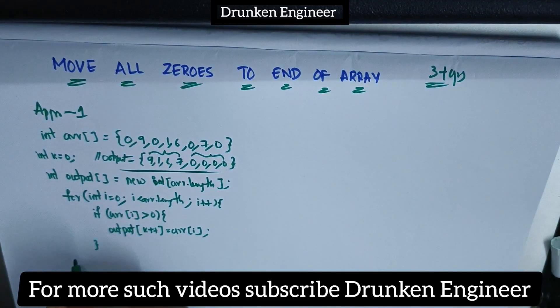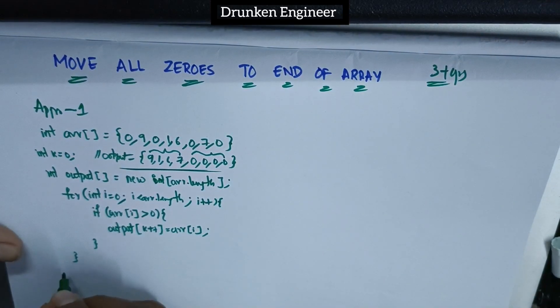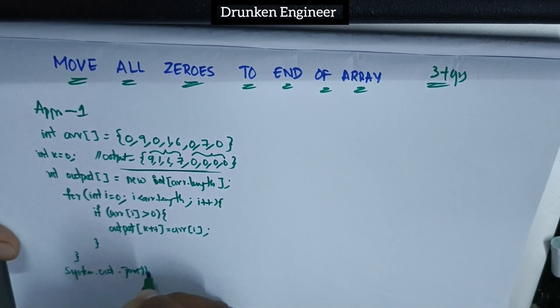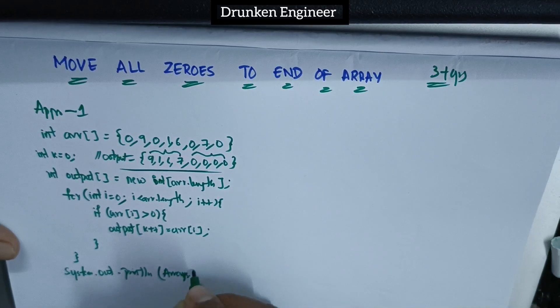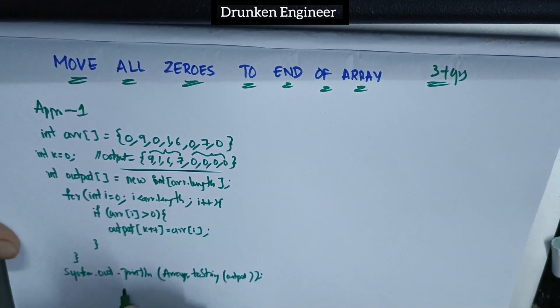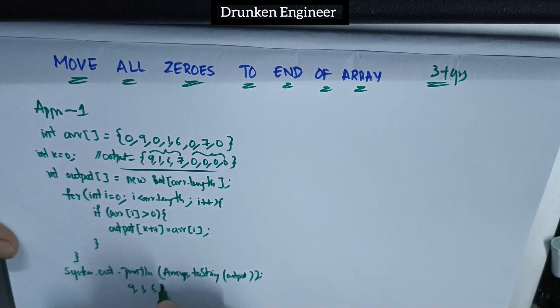Here ends the if condition and the for loop. Then I can directly write System.out.println of Arrays.toString and output. This would print nine, one, seven, zero, zero, zero, zero.